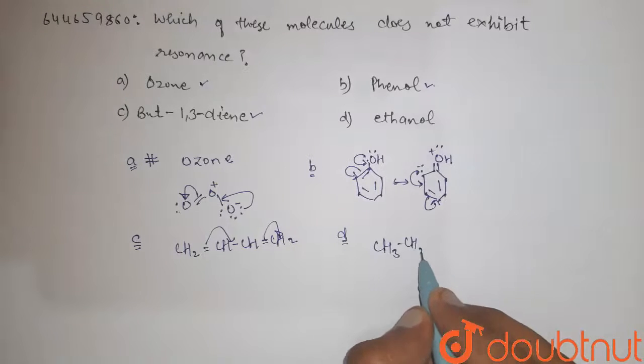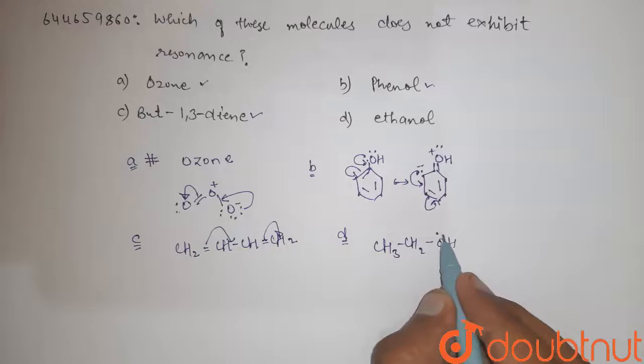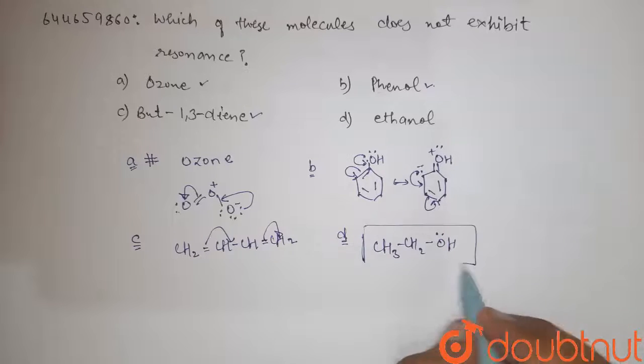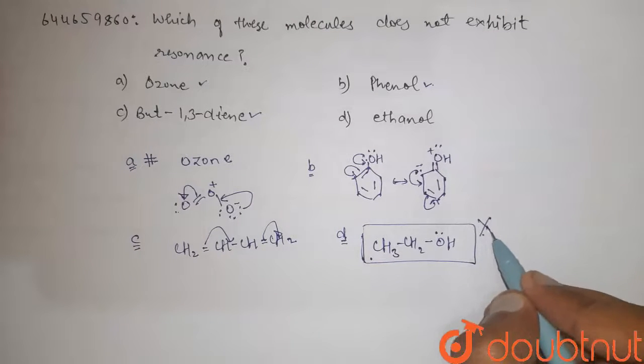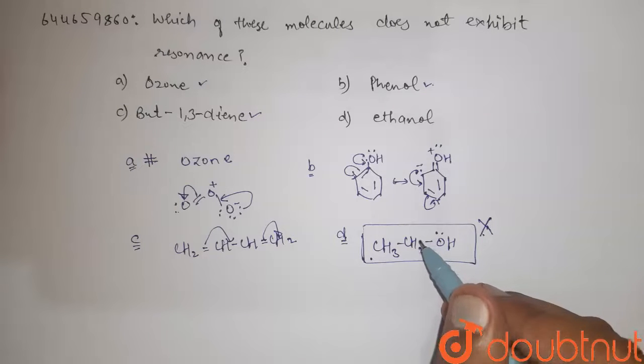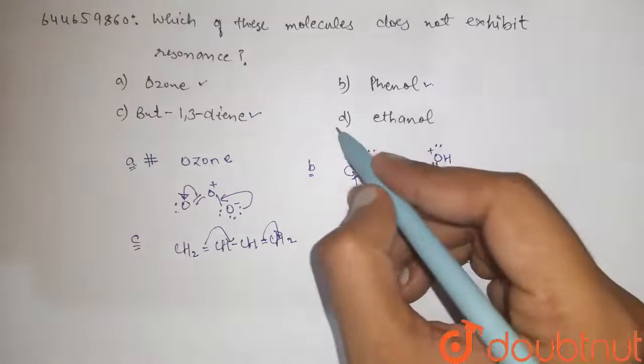Now check option D, ethanol, that is CH3-CH2-OH. So here there is no conjugation. So there is no resonance that takes place because there is no conjugation of lone pairs. So guys, option D.